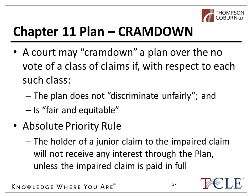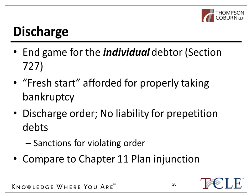The discharge is yet another unique aspect of the bankruptcy process — it's the end game for an individual debtor. For a Chapter 7, the discharge is set forth in Section 727 of the Code, and we again see the fresh start concept embedded in bankruptcy. The discharge is given to the individual debtor for properly following the process of bankruptcy — appropriate honest disclosures, appropriate testimony at the 341 meeting, and so on.